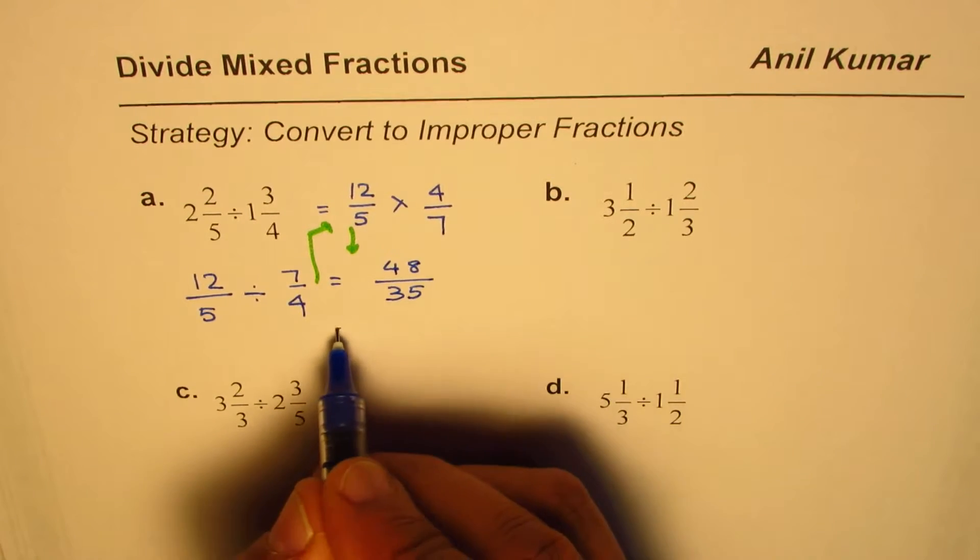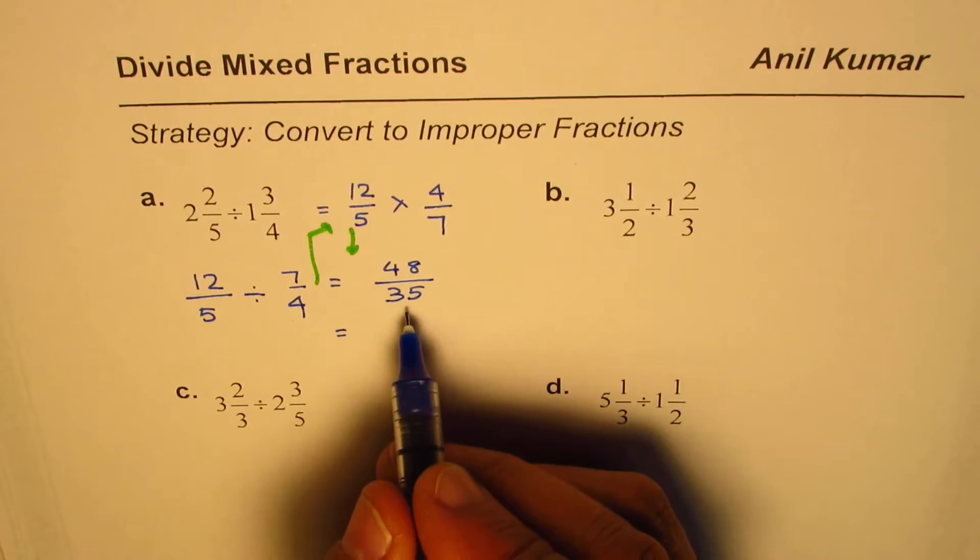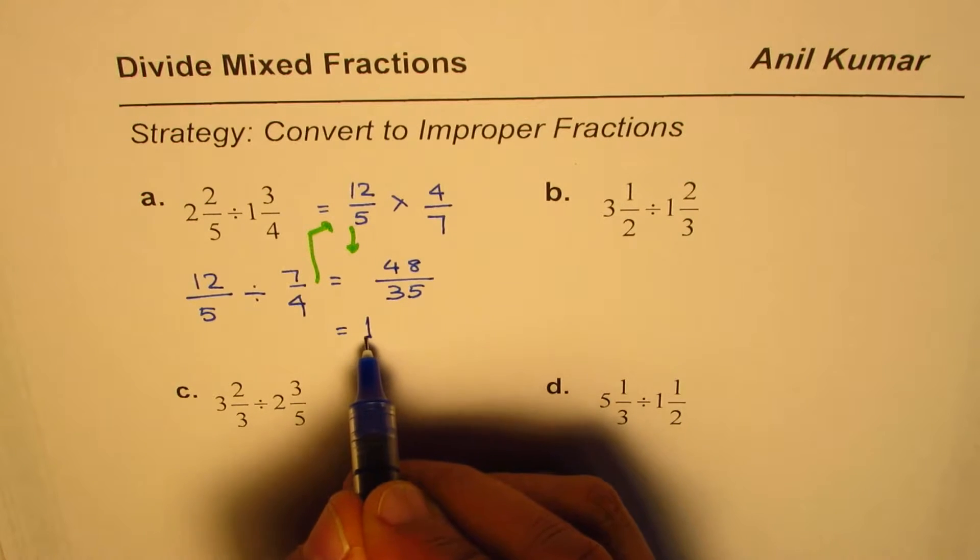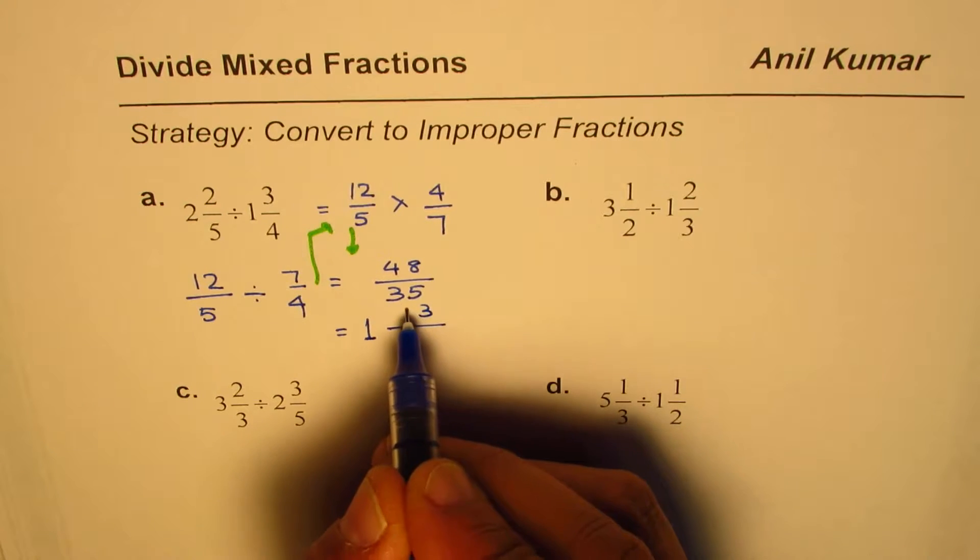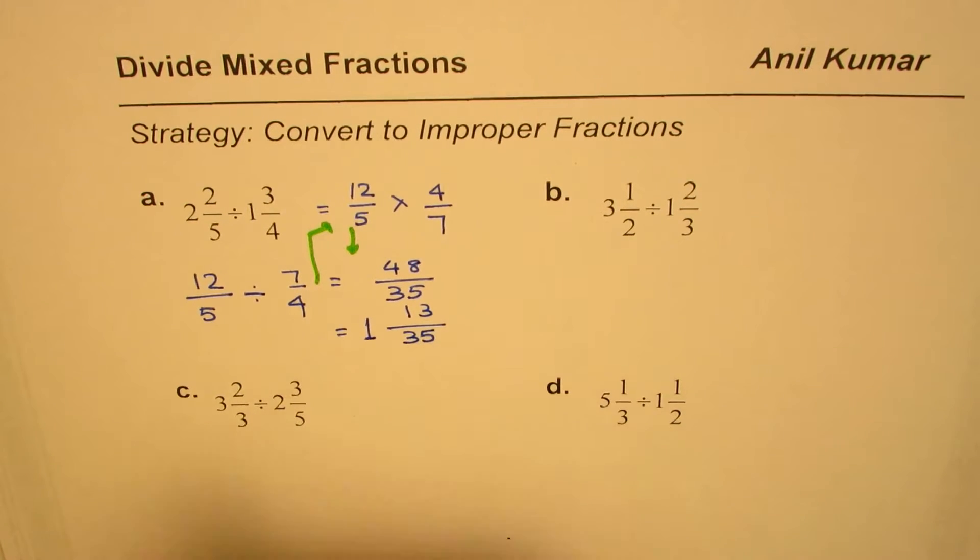Write this number in mixed form. Dividing 48 by 35 means one whole, and when you take away 35 from 48 you get 13 over 35. That becomes your final answer.